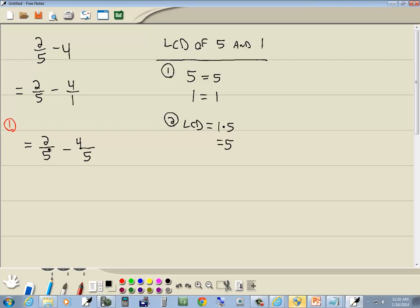So I want to rewrite each fraction with that new denominator. Now our first fraction already had 2/5, so it stays as is. Now our second fraction - we started with denominator 1 and we end up with 5.